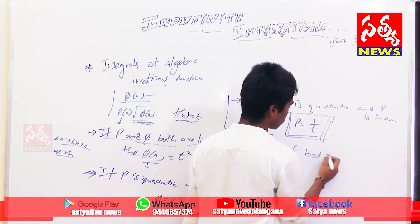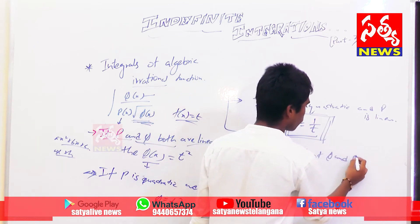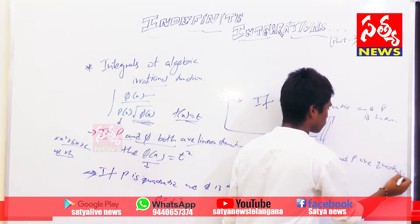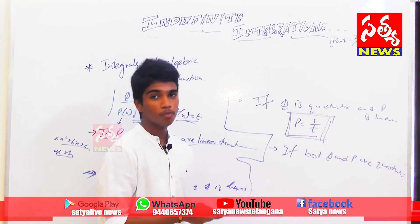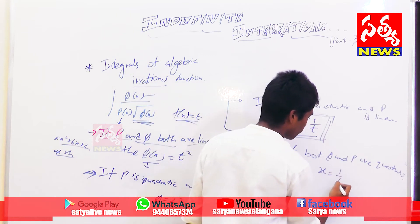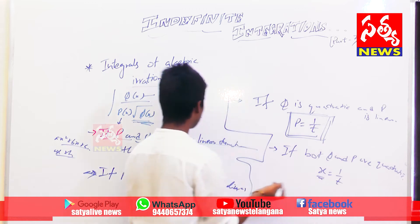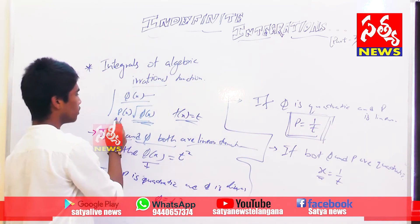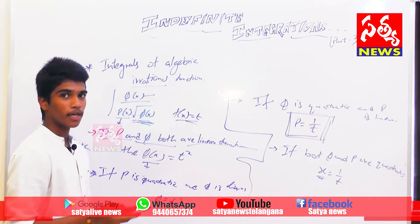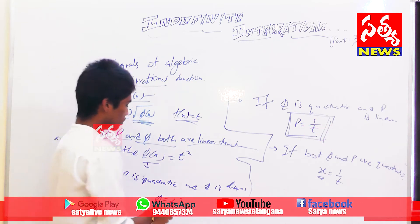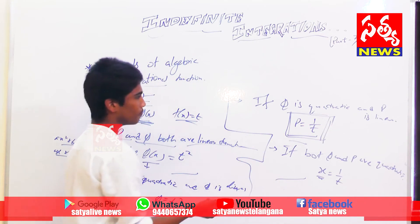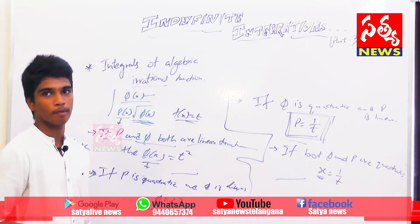The last and final condition: if both q and p are quadratic, we should assume that x equals 1/t. If x appears anywhere in the functions, we replace x with 1/t. These are the minimum required substitutions you have to remember. I have given a clear summary in the description — please copy it.